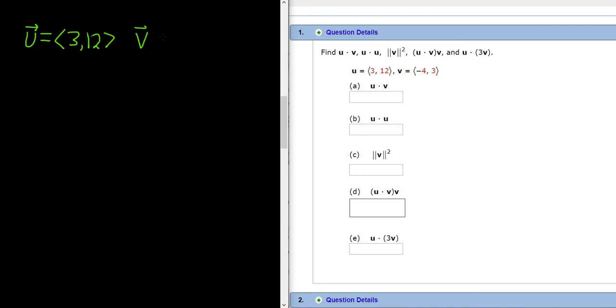And our other vector is v, which is negative 4, 3. Part a, we have to compute u dot v.